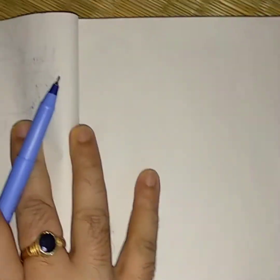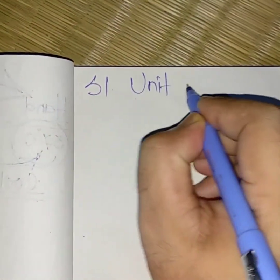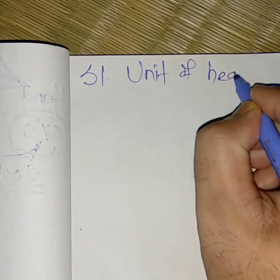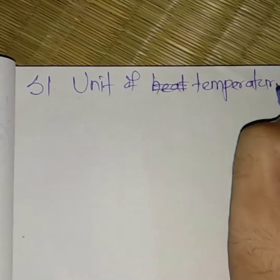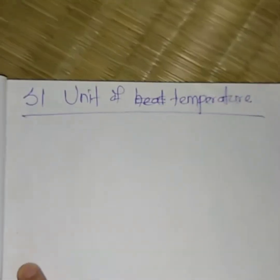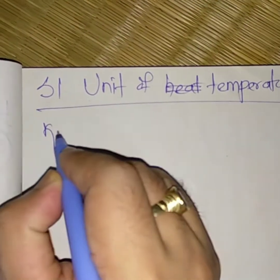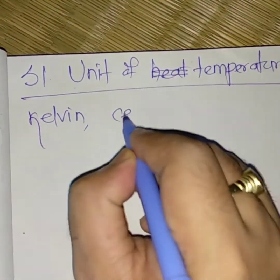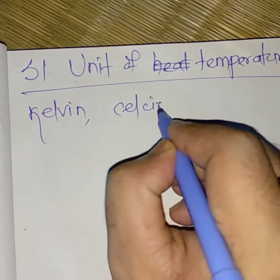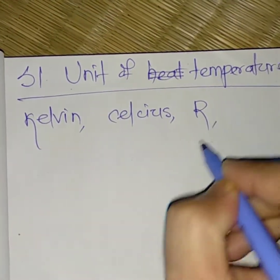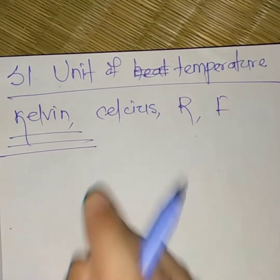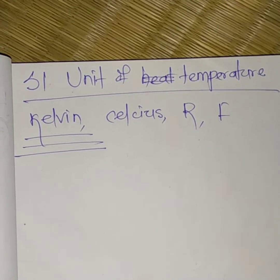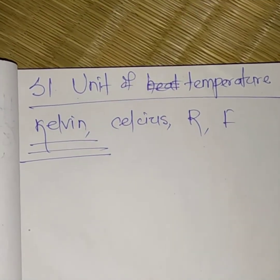Next, what is the SI unit of temperature? We use Kelvin, Celsius, Rømer, and Fahrenheit, but the SI unit of temperature is Kelvin.